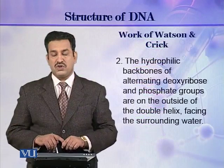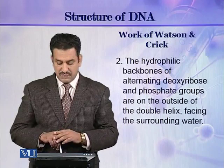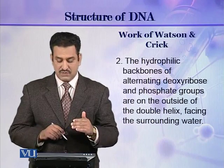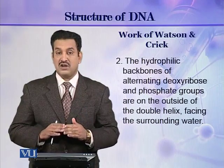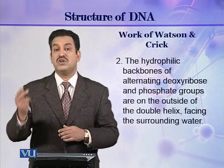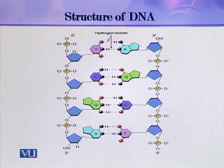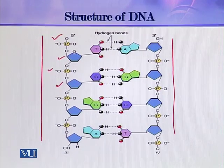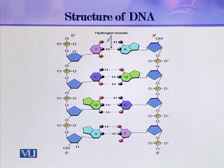The second important point described by Watson and Crick was that the hydrophobic backbones of the alternating deoxyribose and phosphate groups are on the outside of the double helix, facing the surrounding water. As you can see in this picture, the alternating phosphate and pentose groups lie on the outside of the double helix, while the bases stack inside the structure, inside the duplex.